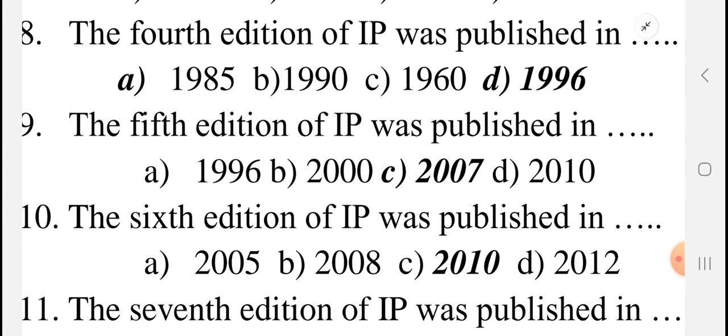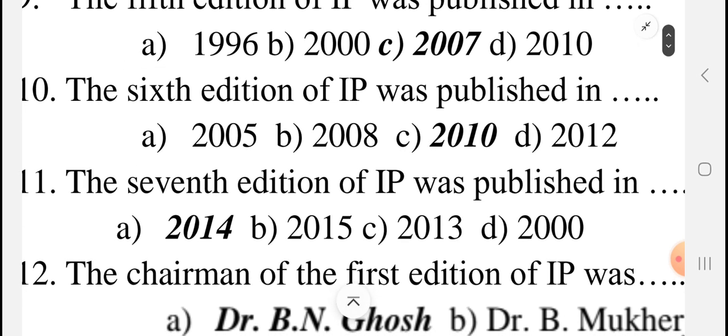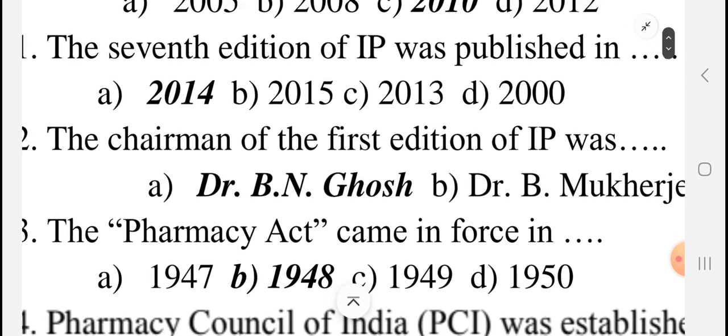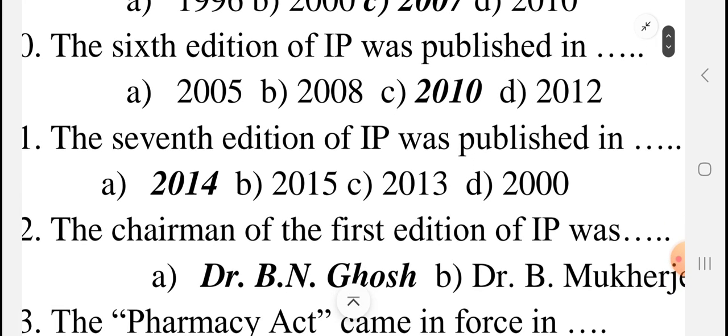First is 55, second is 66, third is 85, fourth is 96. Then the fifth edition was published in the year 2007, and the sixth edition was published in 2010. Note it down: 7th edition of the IP was published in the year 2014. So 6th edition is 2010 and 7th edition is 2014. There are confusing options like 2005, 2008, 2010, 2012 — so choose the correct option.